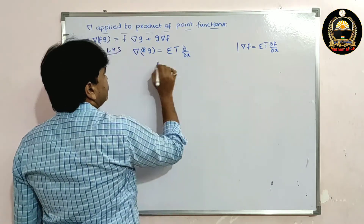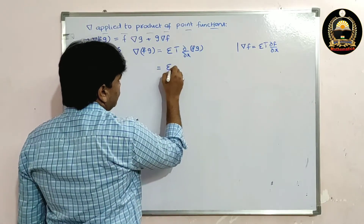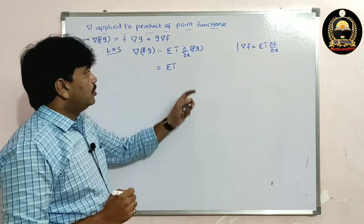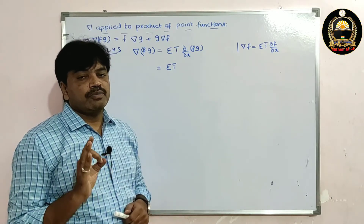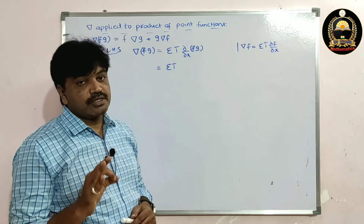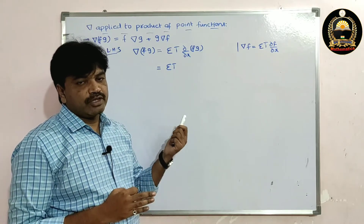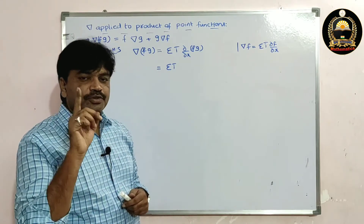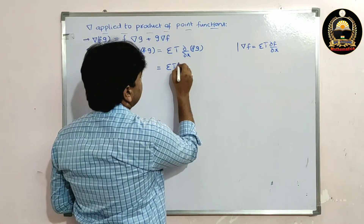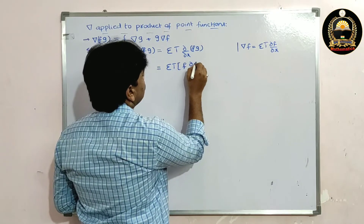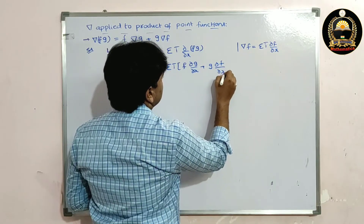So we have sigma(i-bar · ∂/∂x of fg). Now we apply the properties of derivatives — I made one video on properties of derivatives, you can watch that video. By applying the product rule property, we get: f·(∂g/∂x) + g·(∂f/∂x).